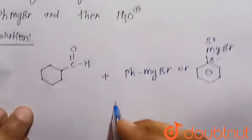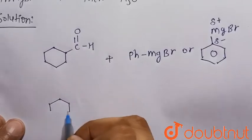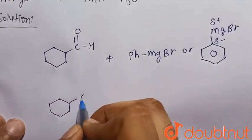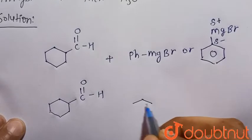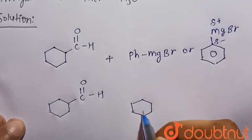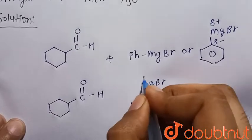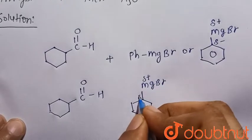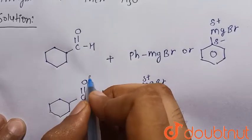So when this Grignard reagent will react with cyclohexane carbaldehyde, so this is the Grignard reagent: PhMgBr delta positive, delta negative. So this will attack, and we know that oxygen is more electronegative, so it attains delta negative.